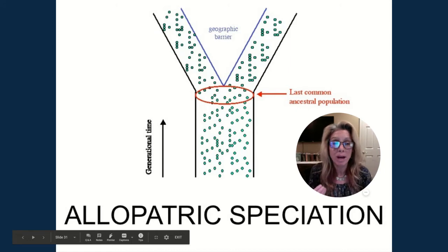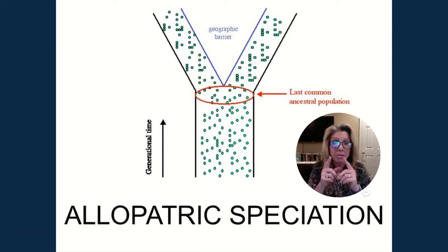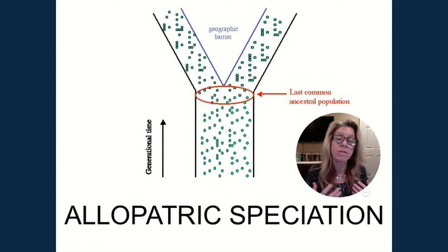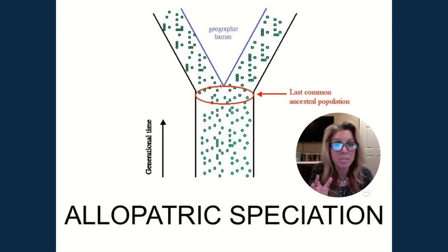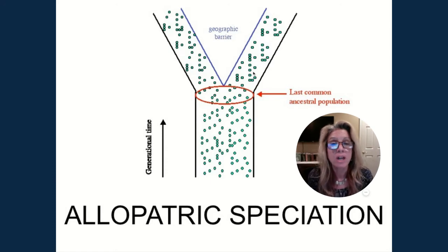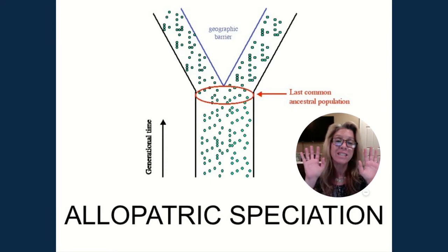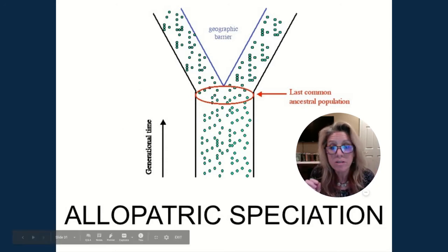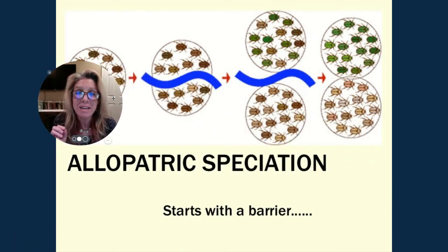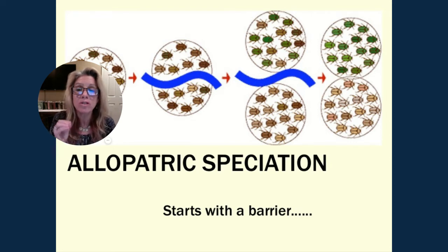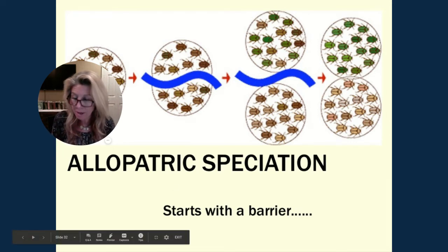The most common way is allopatric speciation, where you have a single species and there's a barrier — you're going left or going right. Evolution is a change in allele frequencies, and a small population is more susceptible to genetic drift. You're taking your one larger species and splitting it; the allele frequencies in the divided groups may not represent the whole. You could have genetic drift, different mutations, and different selection pressures on either side of this barrier.